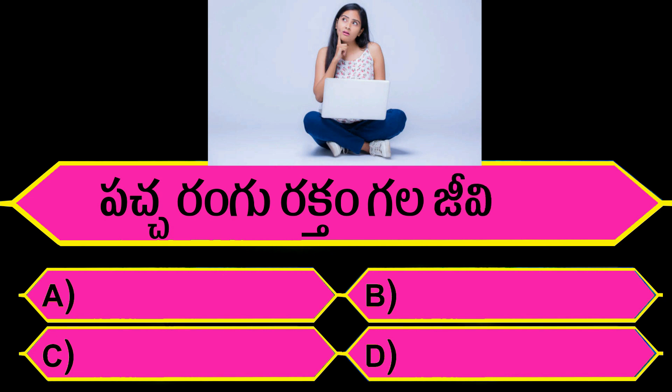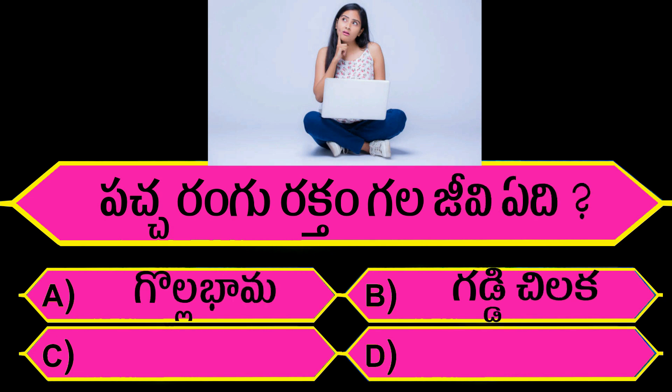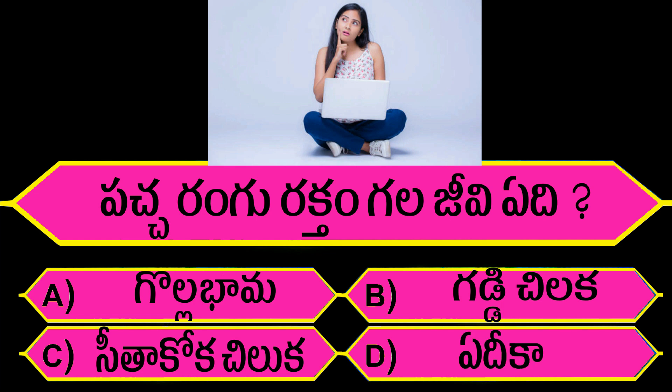Pacharangu rakhtam gala JV edhi. Option A: Gullabama. Option B: Gaddi chiluka. Option C: Sita koka chiluka. Option D: Edhi kaadu.